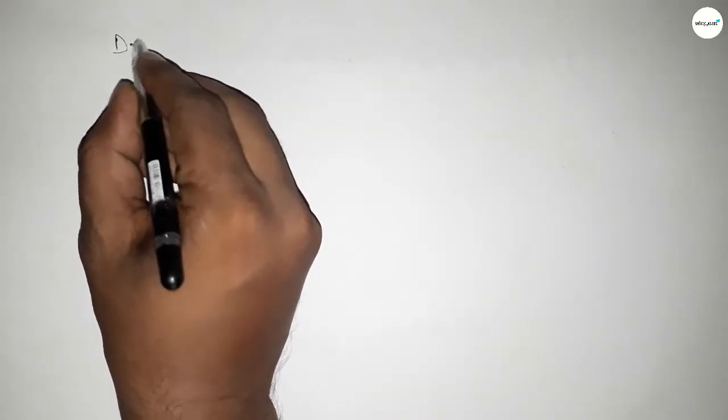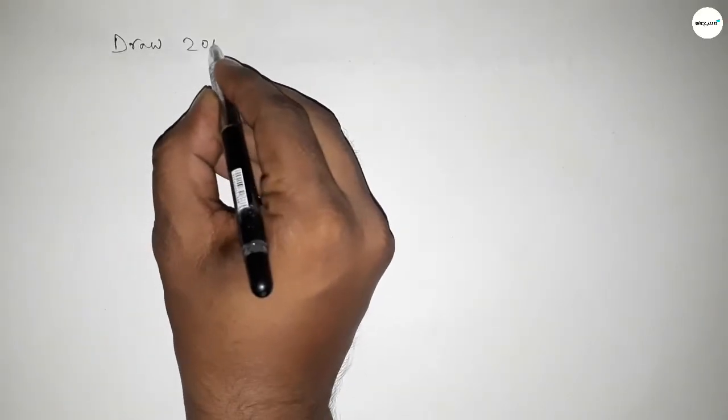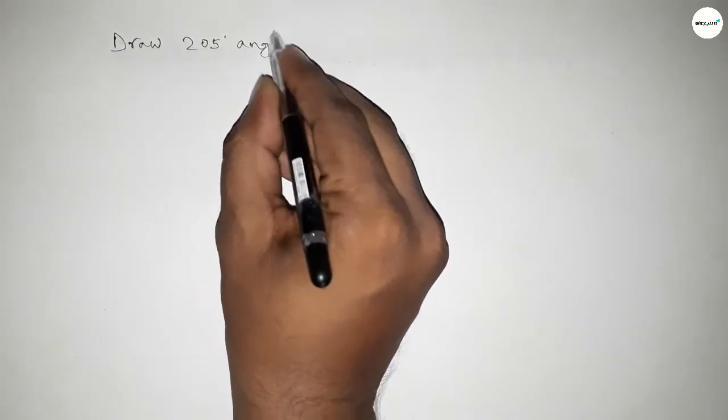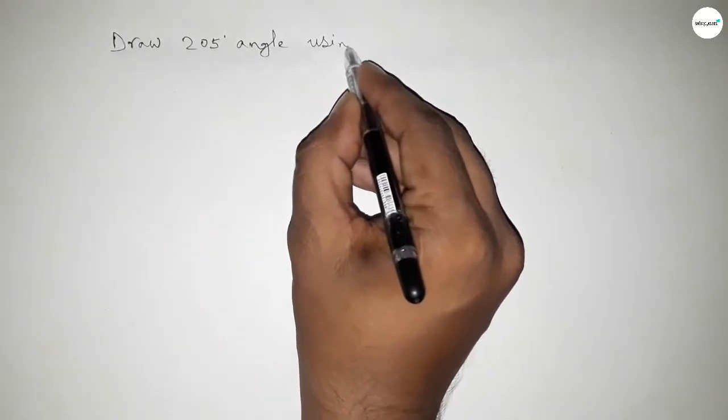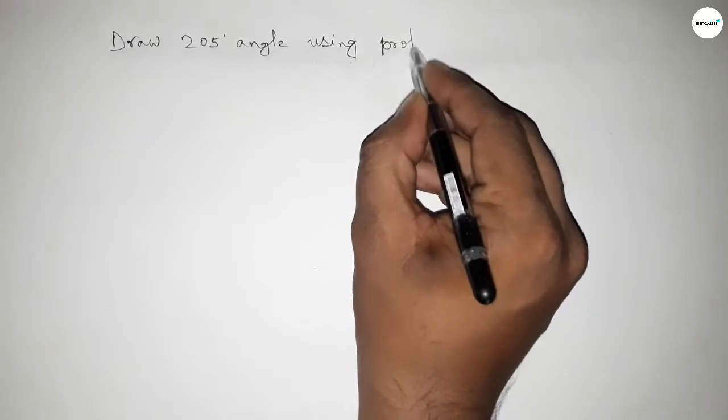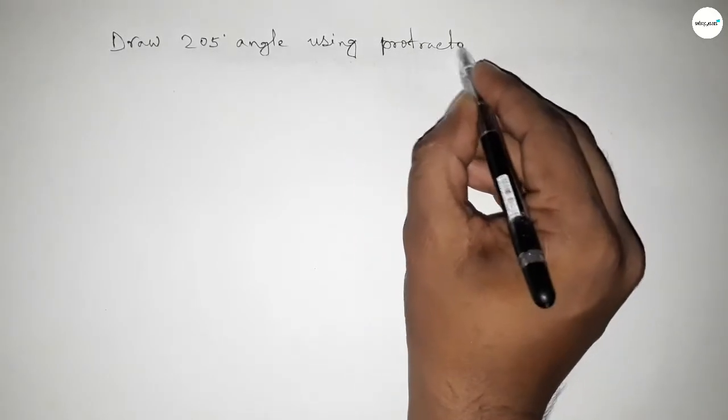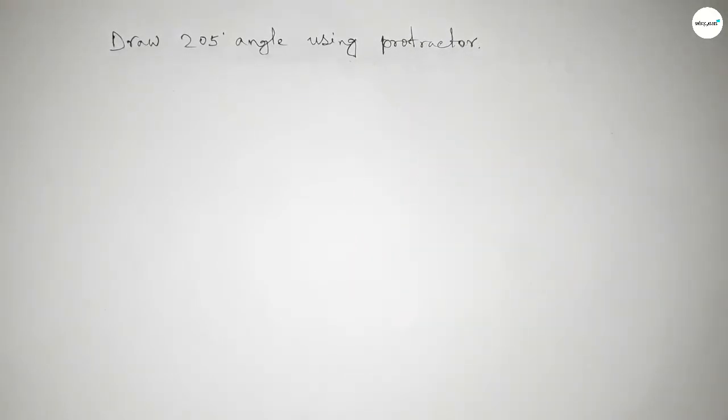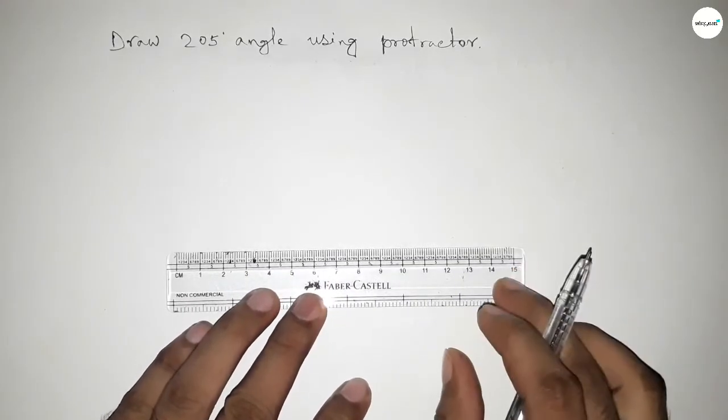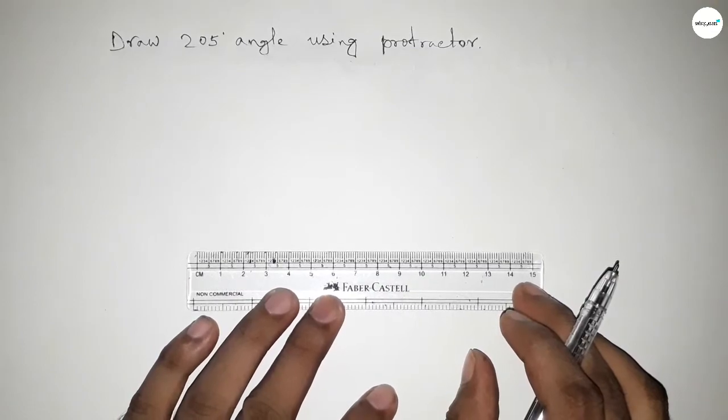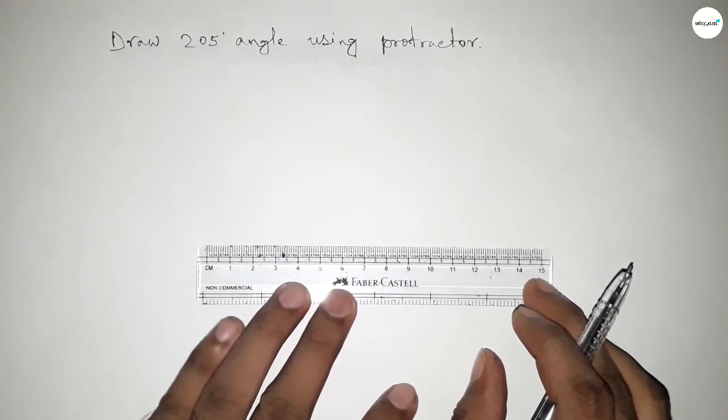Hi everyone, welcome to SI Share Classes. Today in this video we have to draw a 205 degree angle using a protractor. So let's start the video. First of all, we have to draw a line here of any length.